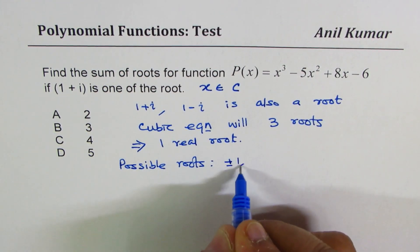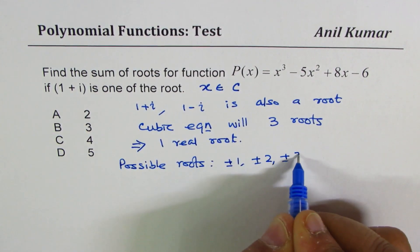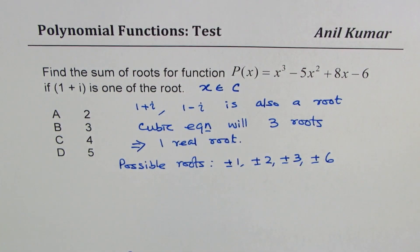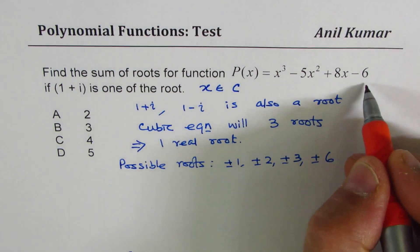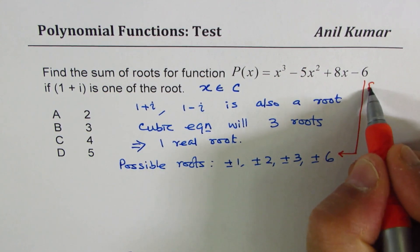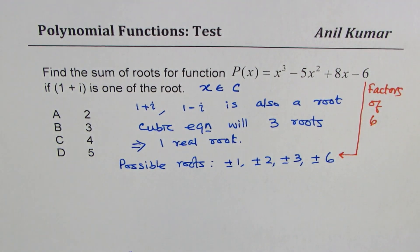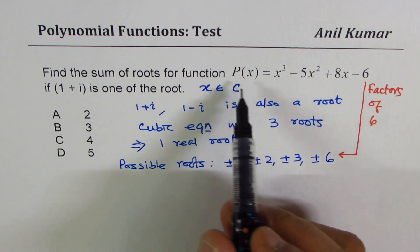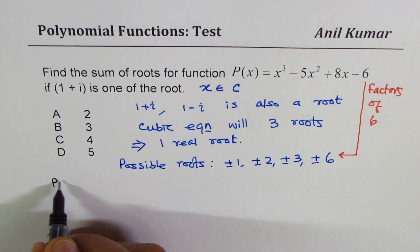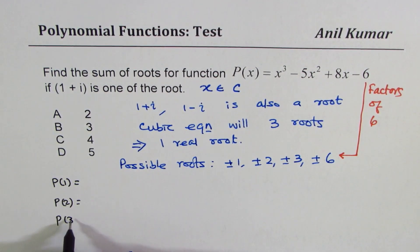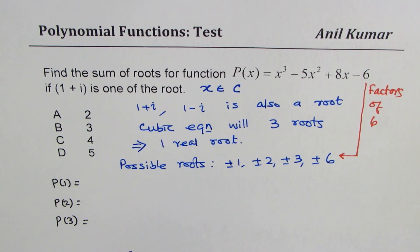So the possible rational roots are ±1, ±2, ±3, and ±6 — the factors of 6. Now let's look into these one by one. If you have a calculator, you can find what p(1), p(2), p(3) are; whichever gives you 0 will be a root.